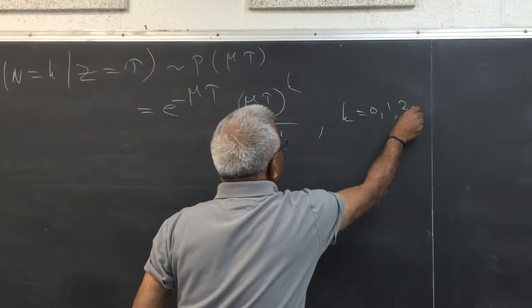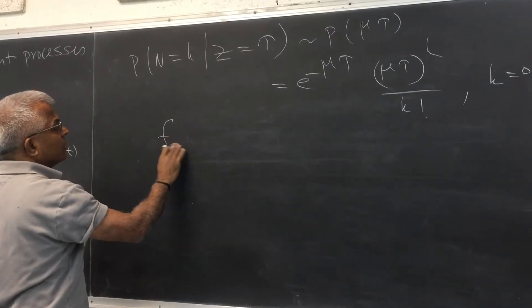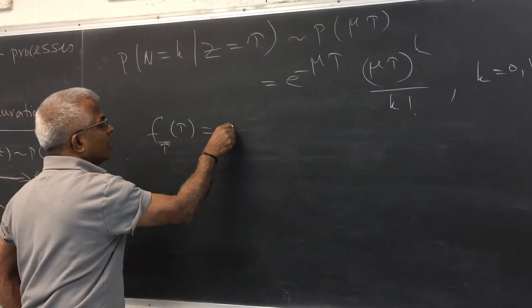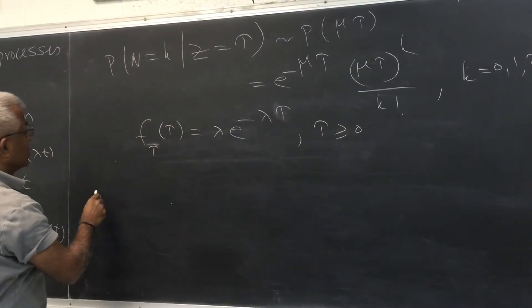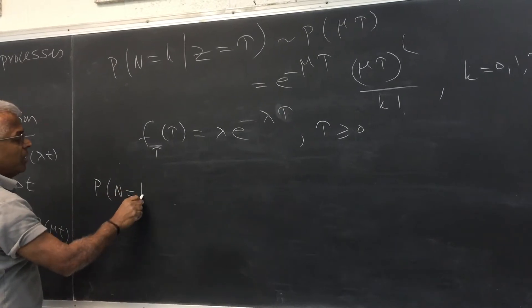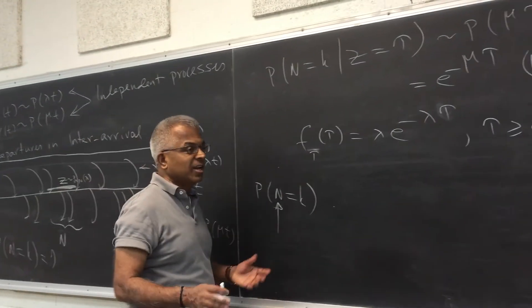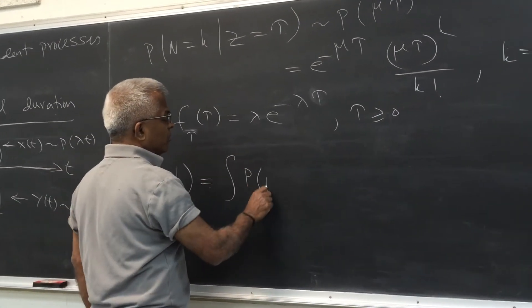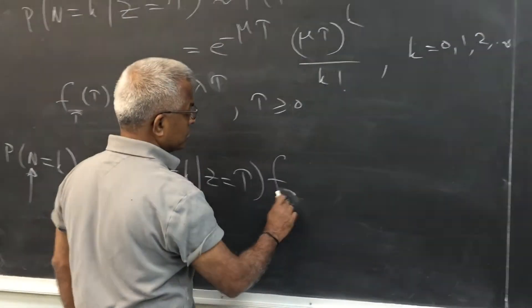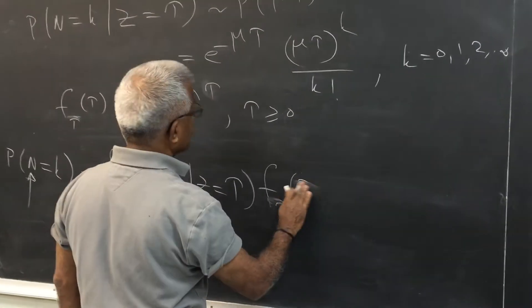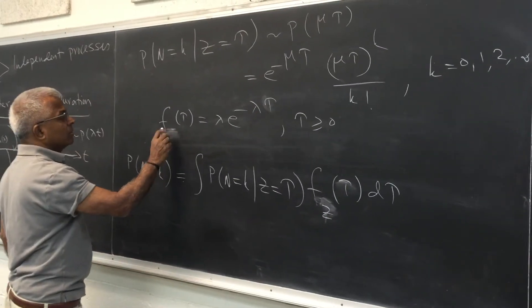K could be 0, 1, 2, 3, etc., up to infinity. Of course this is the conditional distribution. And we also know that f tau of tau is actually lambda e raised to minus lambda of tau for tau positive. So we can put this together and get the unconditional pdf of this random variable, which is the departure statistics in any interval duration, to be probability of using the generalized Bayes rule.